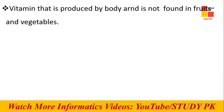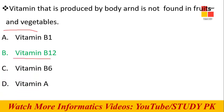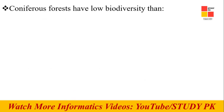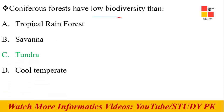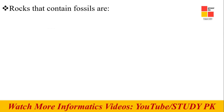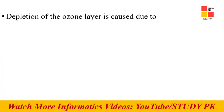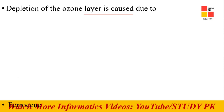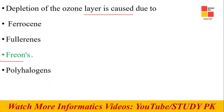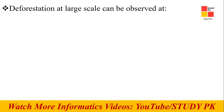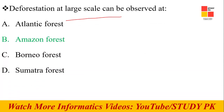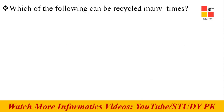Next question: Which vitamin is produced by the body and is not found in fruits and vegetables? Vitamin B12 is the right answer. Next: Coniferous forests have lower biodiversity than deciduous forests. Rocks that contain fossils are sedimentary rocks. The depletion of the ozone layer is caused by freons. Deforestation at large scale can be observed at the Amazon forest.